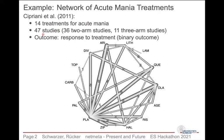There are a total of 47 studies. Most of them are two-arm studies comparing two of these 14 treatments. However, there are also 14 three-arm studies comparing three of these 14 treatments.